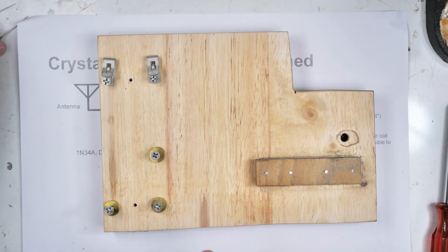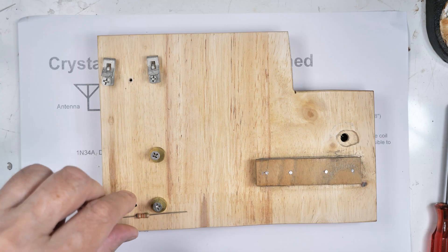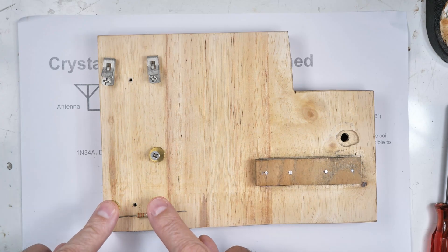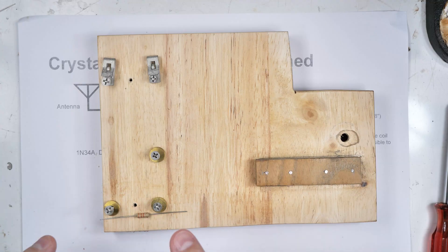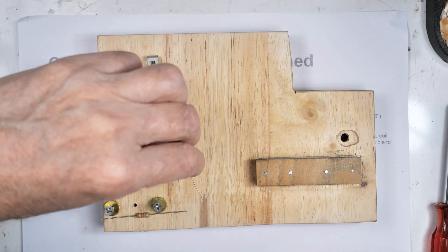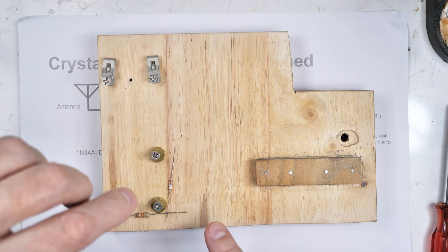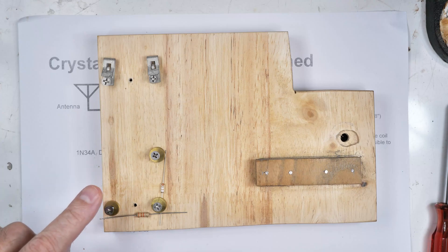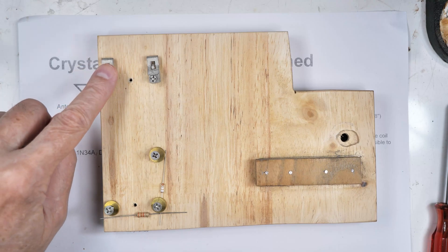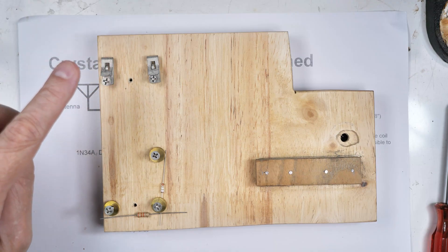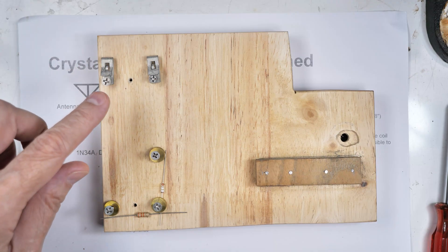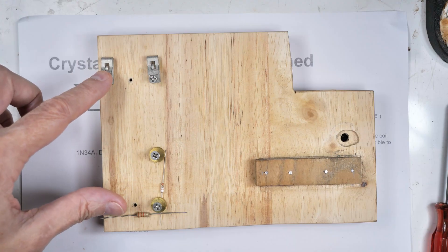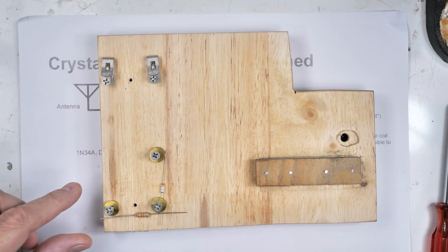So over here are our connections. This resistor will go here. The two screws here will be the earphone connections. Between these will be our diode. The one side of the coil will come here and the other side of the coil will go over here. I will put the circuit diagram in the back and then after I finish it and test it, I'll make sure that I'm telling you correctly.